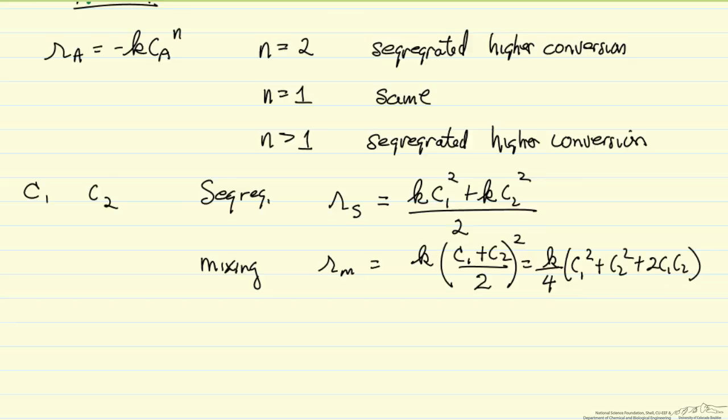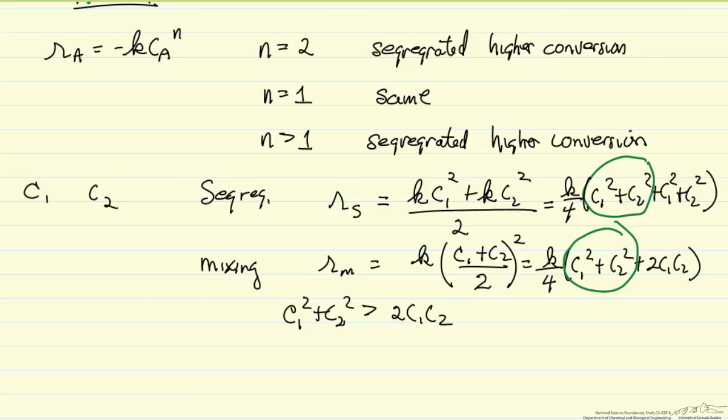And if I want to make a comparison, I could for the segregated flow multiply the top and the bottom by 2. So I have K over 4, C1 squared plus C2 squared plus C1 squared plus C2 squared. And so if we want to compare now these two, of course this term is the same in both.